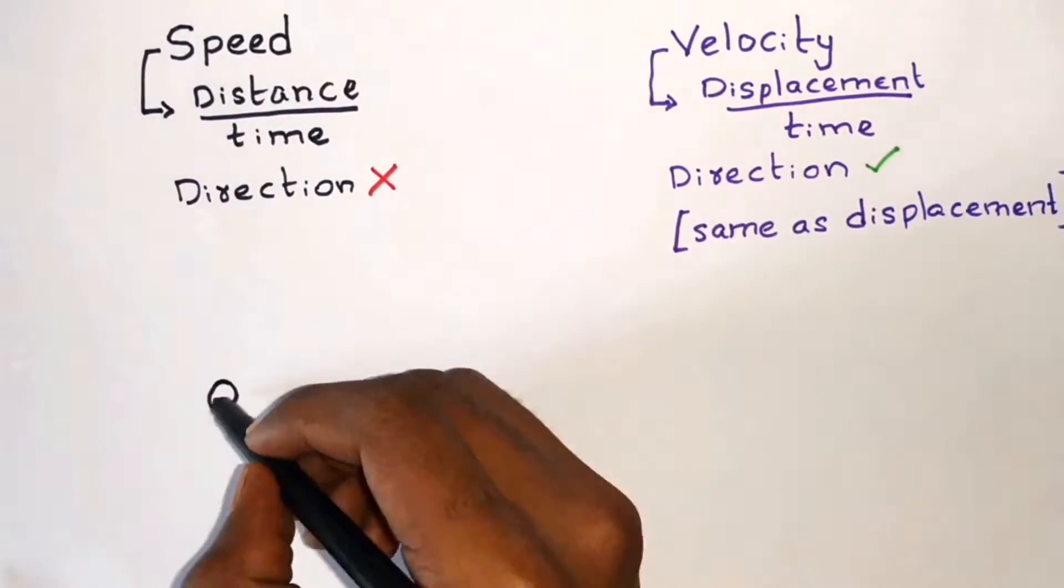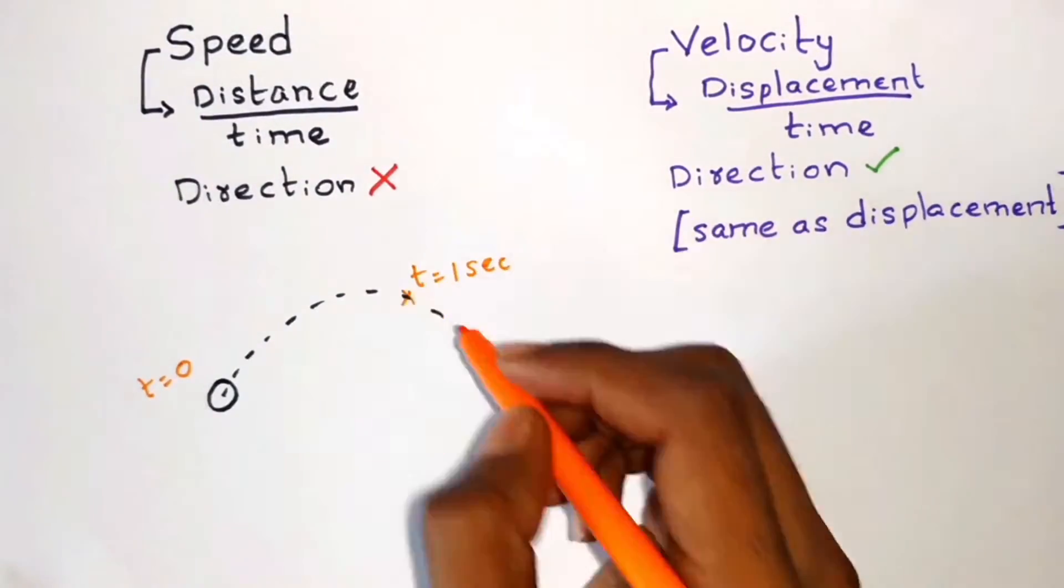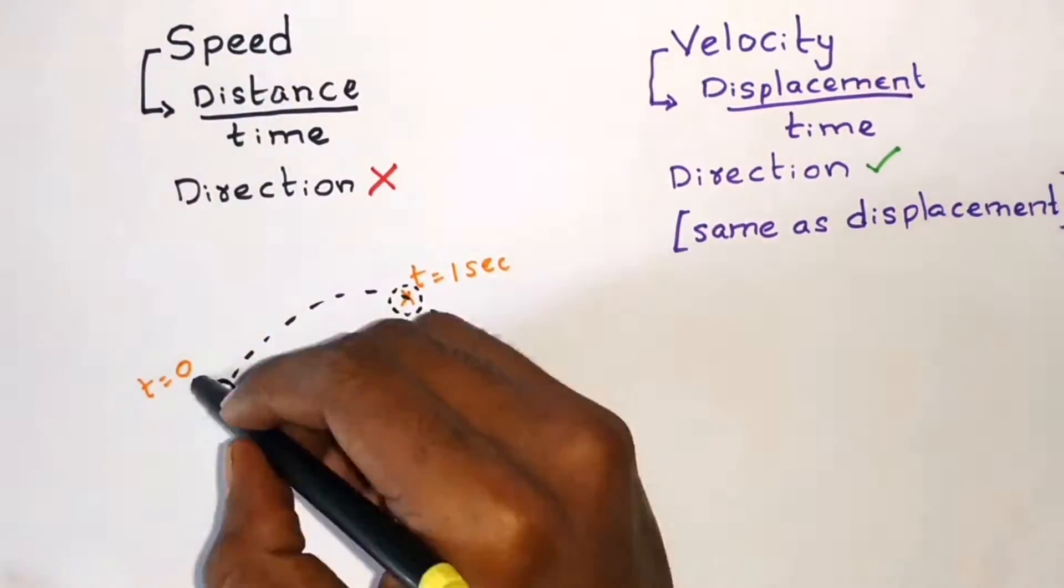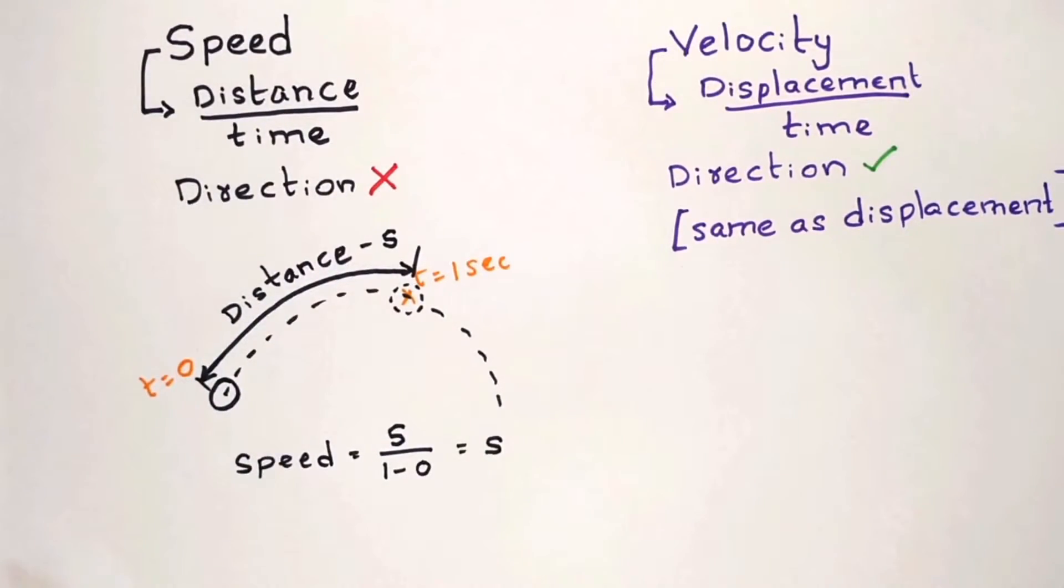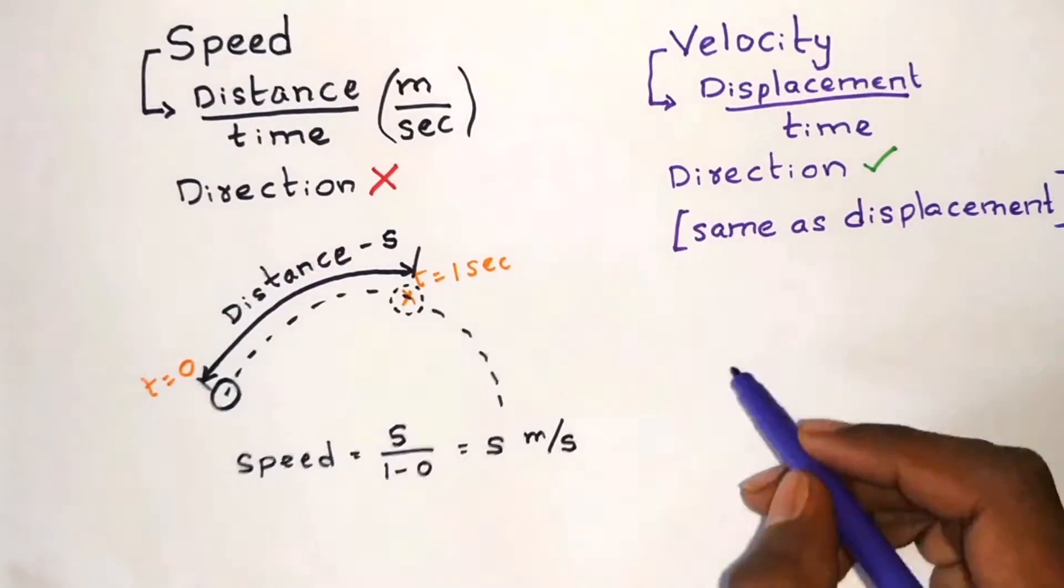To explain this further, let's consider a ball thrown as a projectile. If the ball covers a distance s in one second, then its speed equals distance covered divided by the time duration. So it will be s divided by one second, which is s meter per second. Its units are given by meter per second or kilometer per hour.